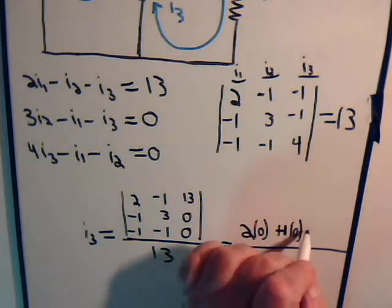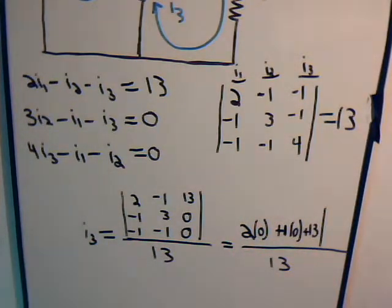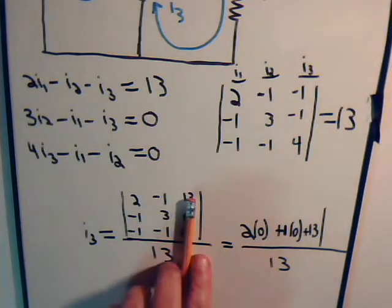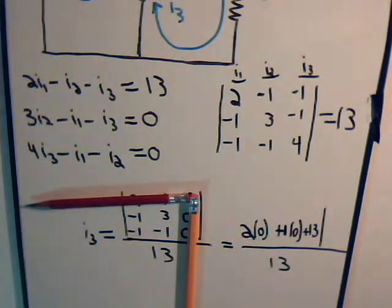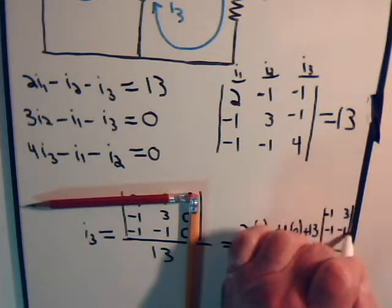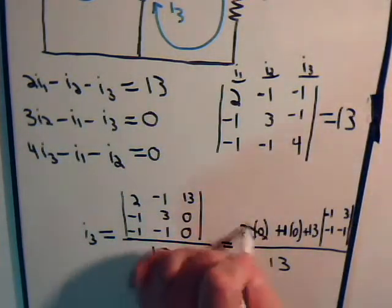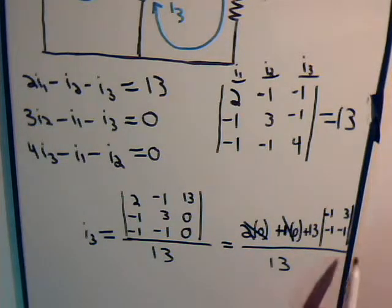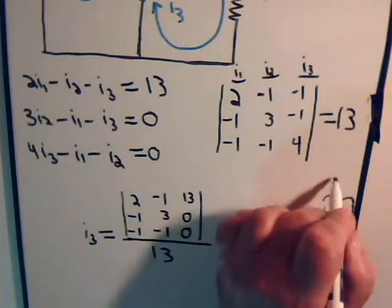Then we have plus 13 times this submatrix. Cover up the column, cover up the row. And we have -1, -1, 3, -1. So that's 0, that's 0, and the value of this 2 by 2 determinant: we have 1 minus -3, or that's 1 plus 3, which has a numerical value of 4.